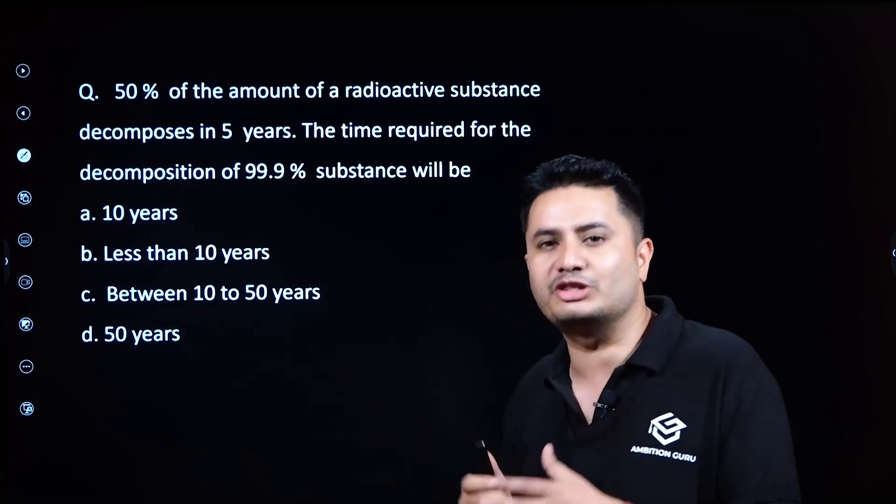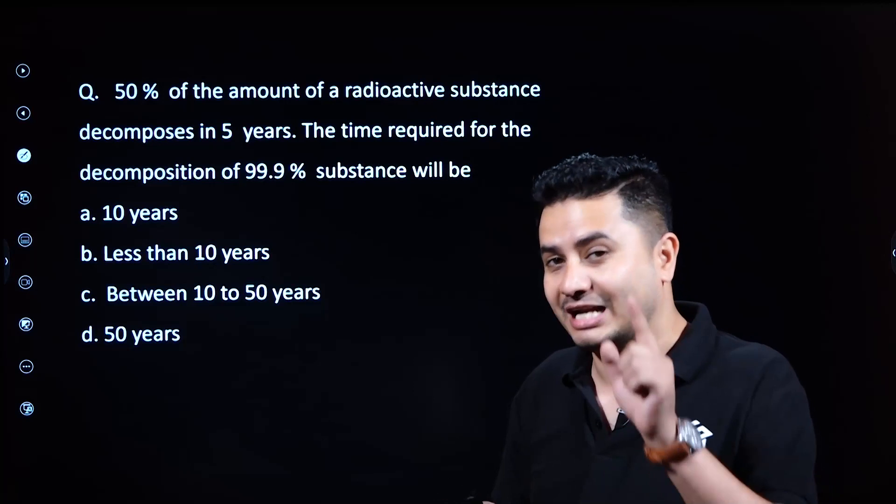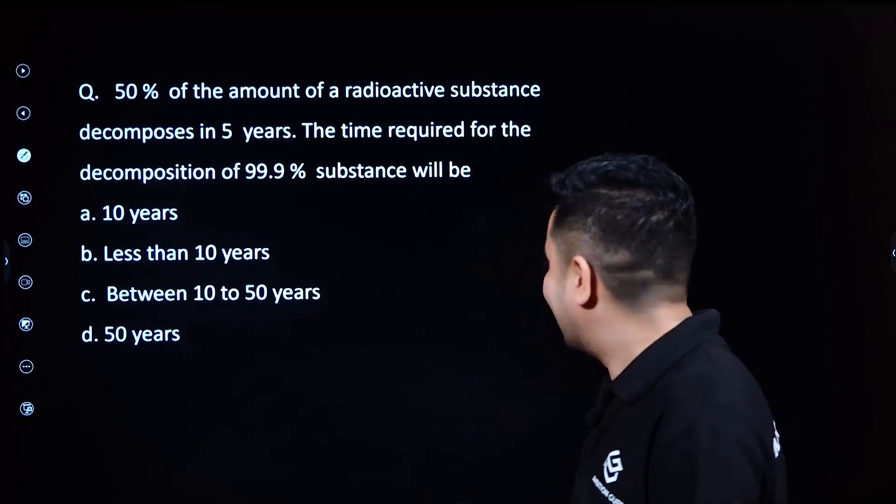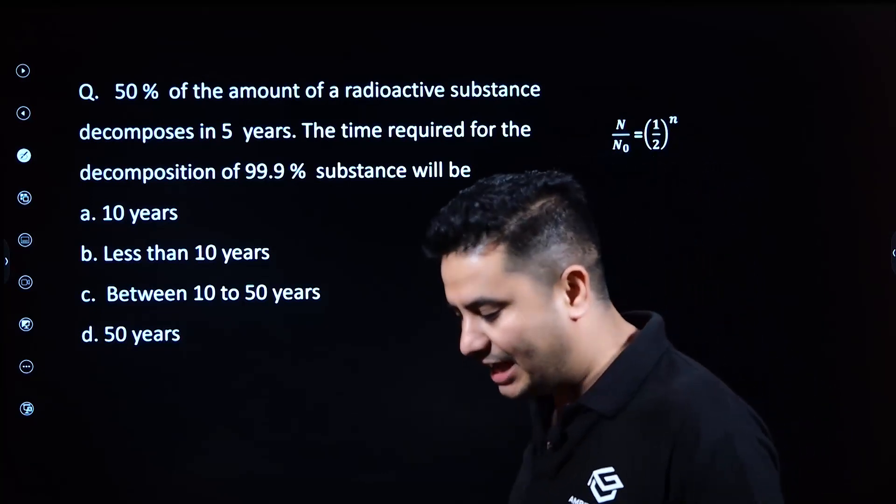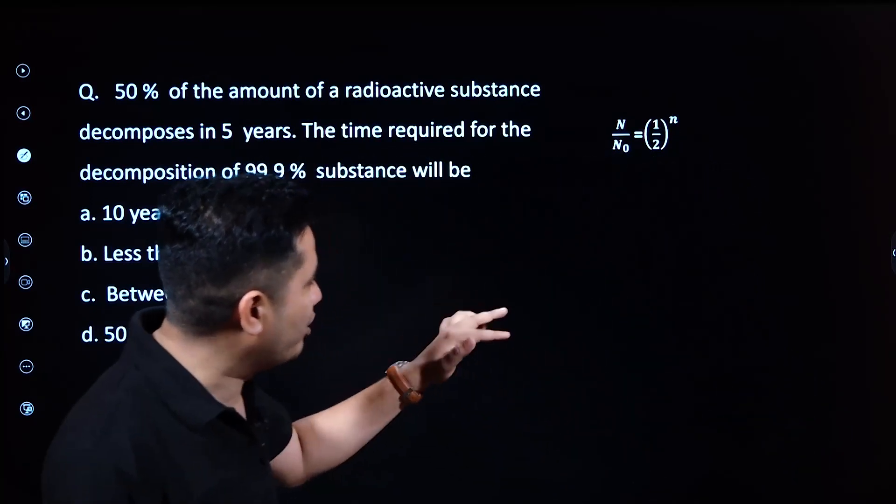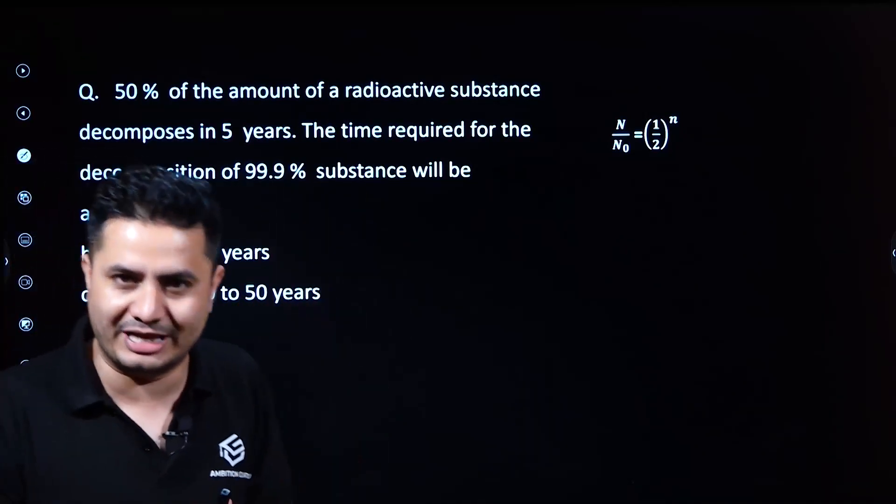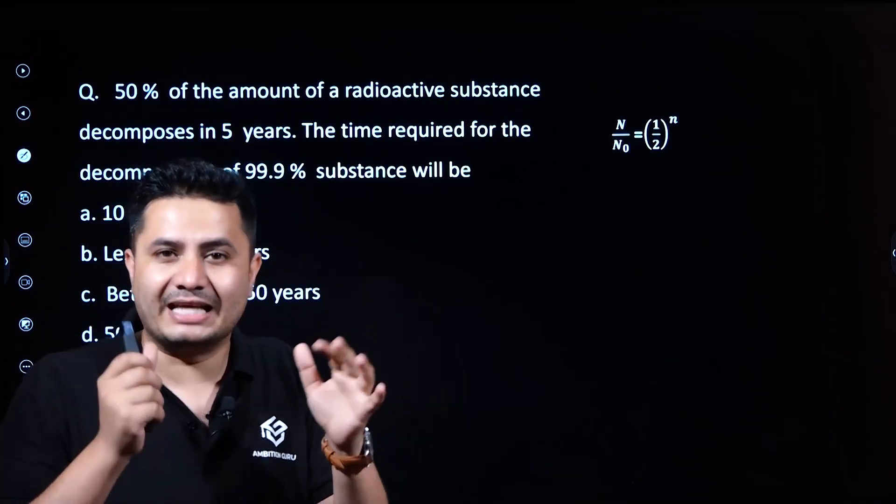From half-life period science, we know the number of half-life periods. The formula is N = N₀ × (1/2)^n, where N is the amount of substance that remains undecayed.